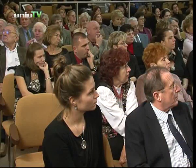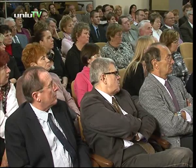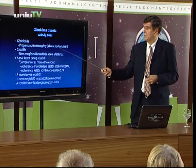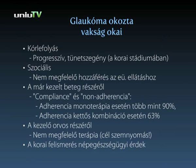Ha ilyen sok mindent tudunk a zöldhályogról, akkor miért okoz még mindig vakságot, nem is kis számban? A magyarázat egyrészt maga a kórlefolyás: egy progresszív, tünetszegény betegségről van szó, elsősorban a korai időszakban. Szociális okai is vannak, hiszen nem megfelelő a hozzáférés az egészségügyi ellátáshoz. A compliance a betegnek a hozzáállása az egész betegségéhez, az adherencia pedig a gyógyszerhez való ragaszkodás – hogy használja-e azt a gyógyszert, amit az orvos felír neki.